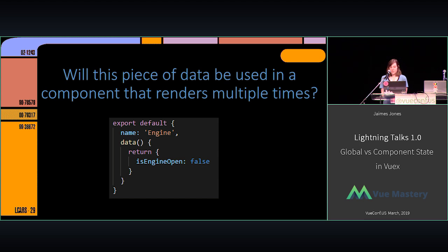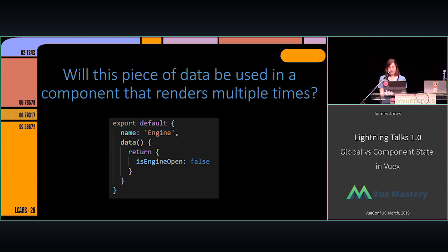If a piece of data is used in a component that renders multiple times, this comes down to instances again. Say we can display multiple engines at a time and open them to show more information. If I have one piece of data called 'is the engine open' and I open one engine, all the engines are going to open — and I probably don't want that, or my ship probably isn't going to run very well. So this should be in your local state, because you want multiple instances of it.